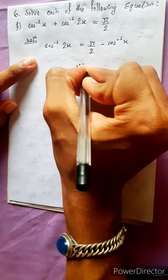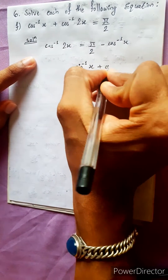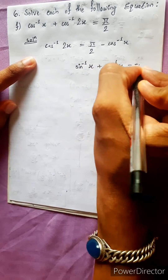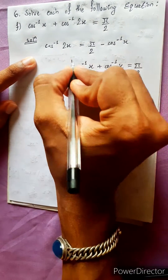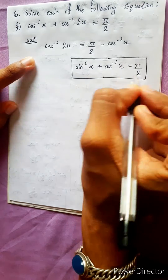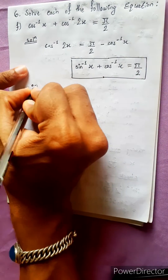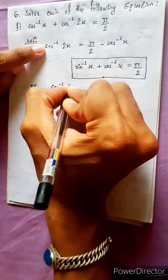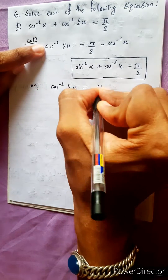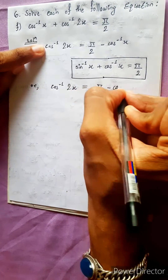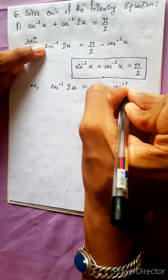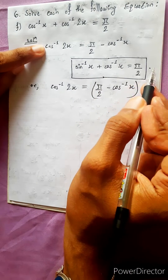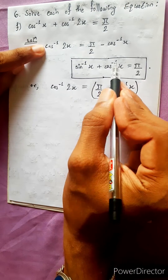We use the formula: sin inverse x plus cos inverse x equals to pi by 2. So the formula gives us cos inverse 2x equals to pi by 2 minus cos inverse x, which means pi minus cos inverse x.